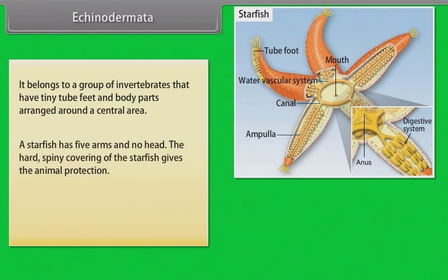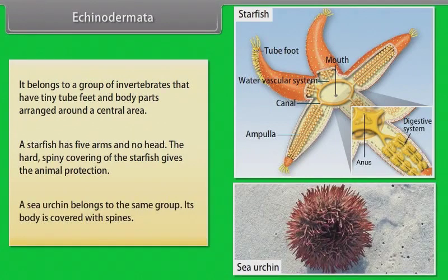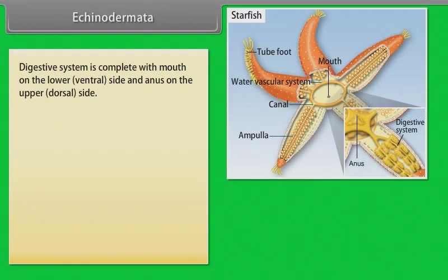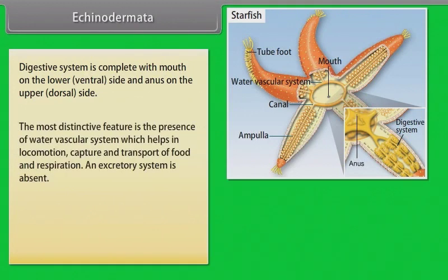A starfish has five arms and no head. The hard spiny covering of the starfish gives the animal protection. A sea urchin belongs to the same group, and its body is covered with spines. The digestive system is complete with mouth on the lower ventral side and anus on the upper dorsal side. The most distinctive feature is the presence of a water vascular system, which helps in locomotion, capture and transport of food, and respiration.